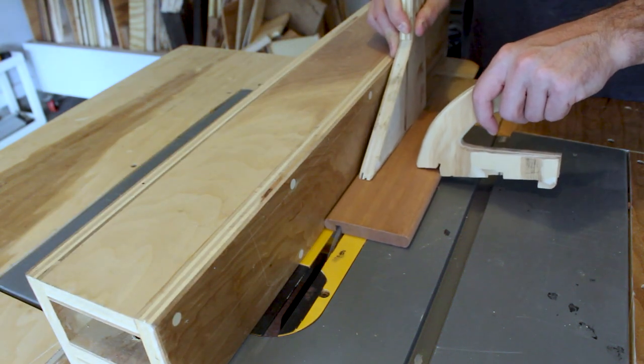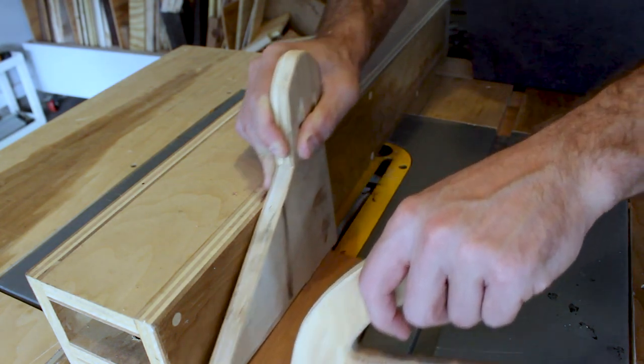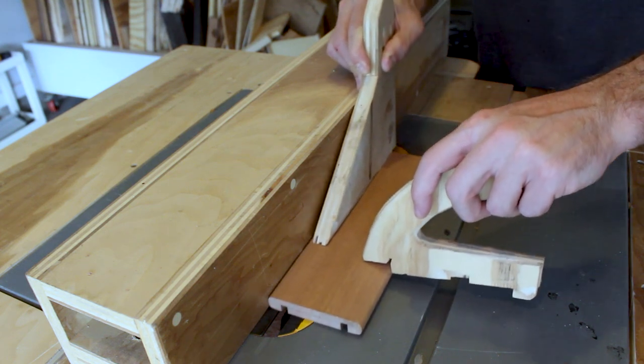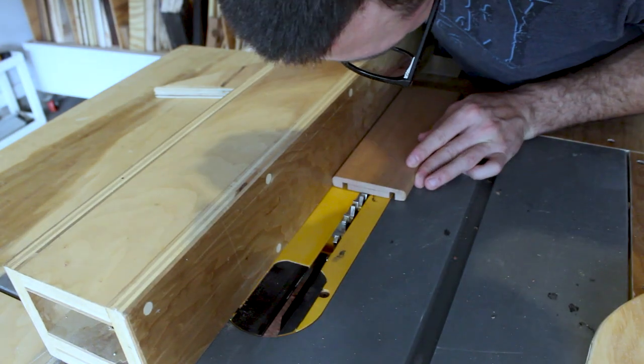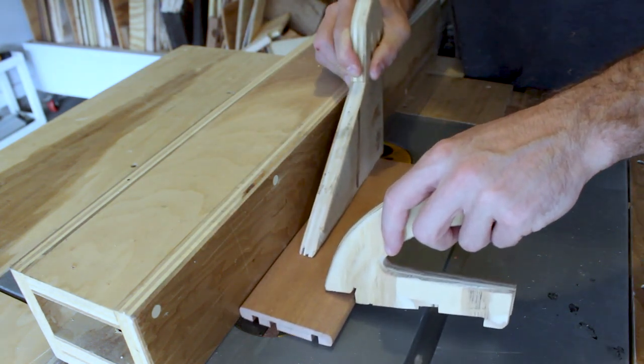Now I'll cut a groove that goes halfway through the piece, flip the piece around, and do a matching groove on the other side. I'll move the groove in a hair and repeat the process. You can use this same technique even if you only have an eighth inch blade. It'll just require two cuts per groove.